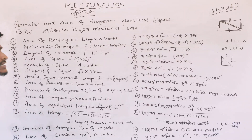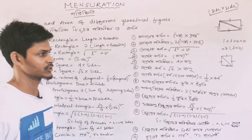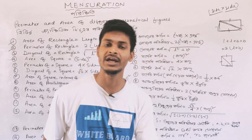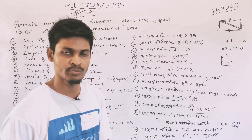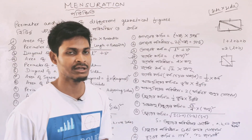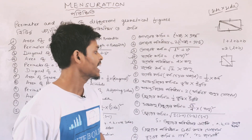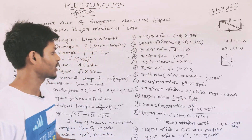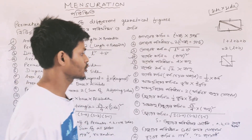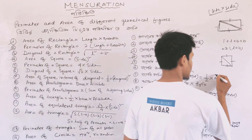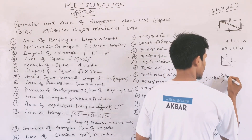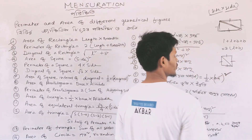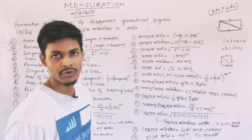Area of square in terms of diagonal: if the diagonal is 2 cm, the area of the square is half into diagonal squared.